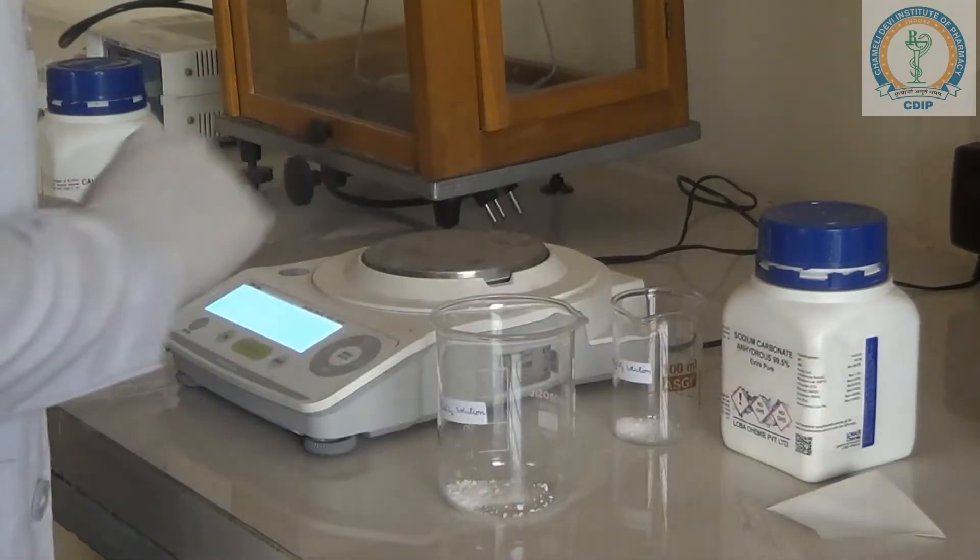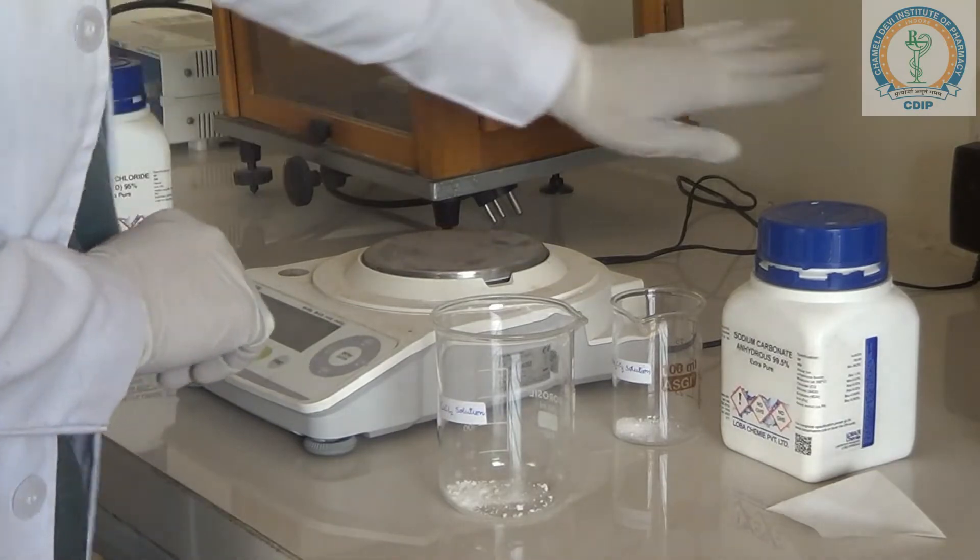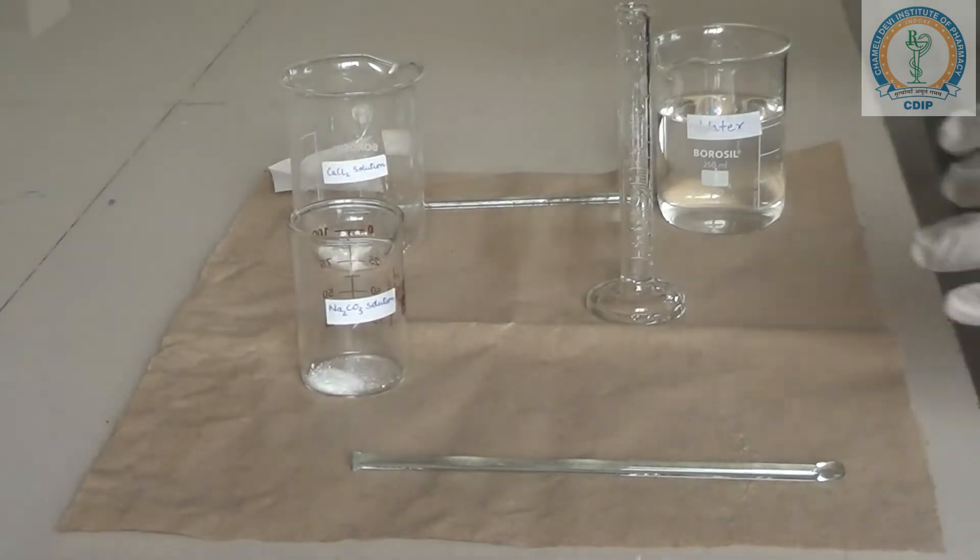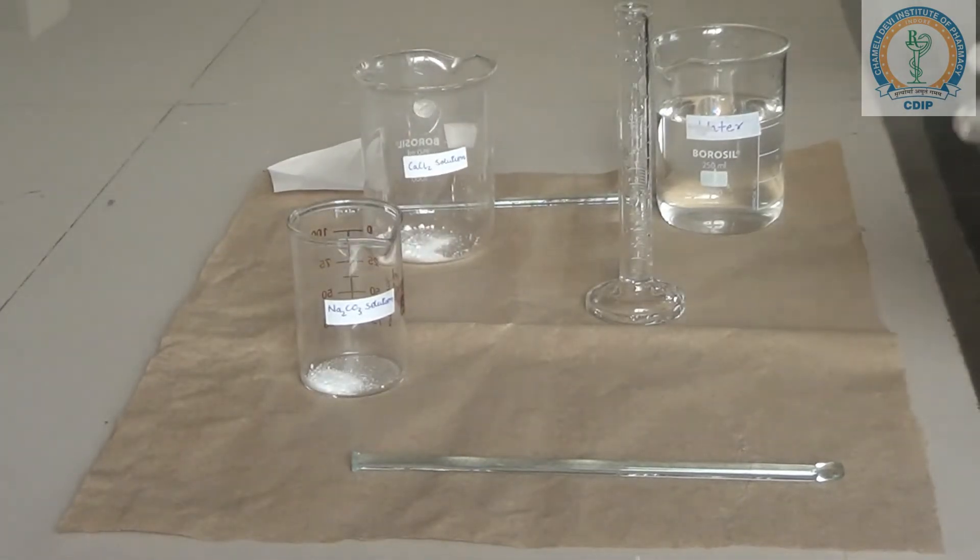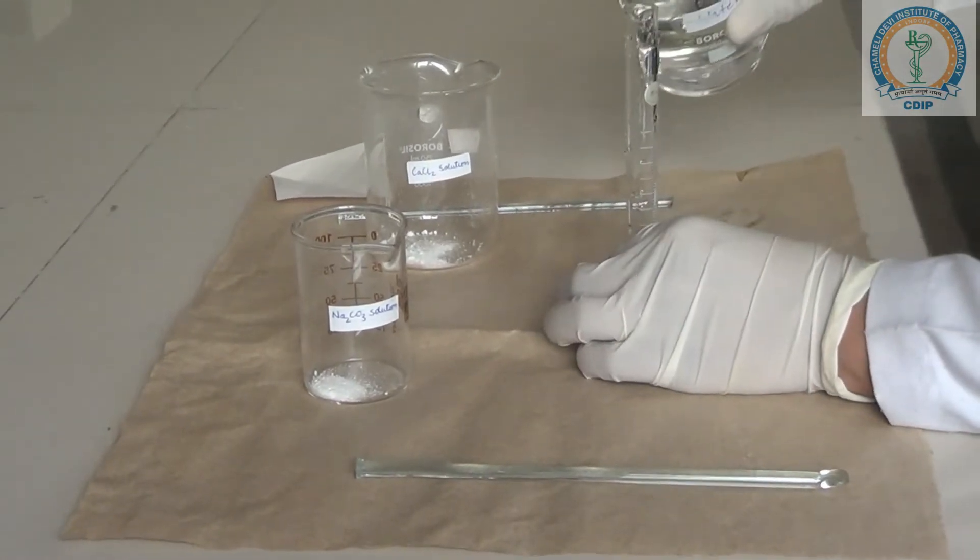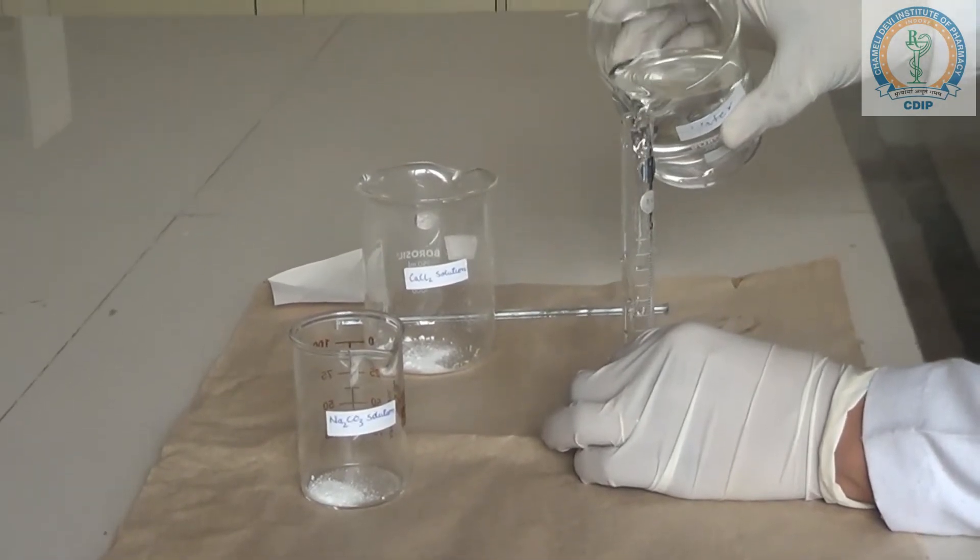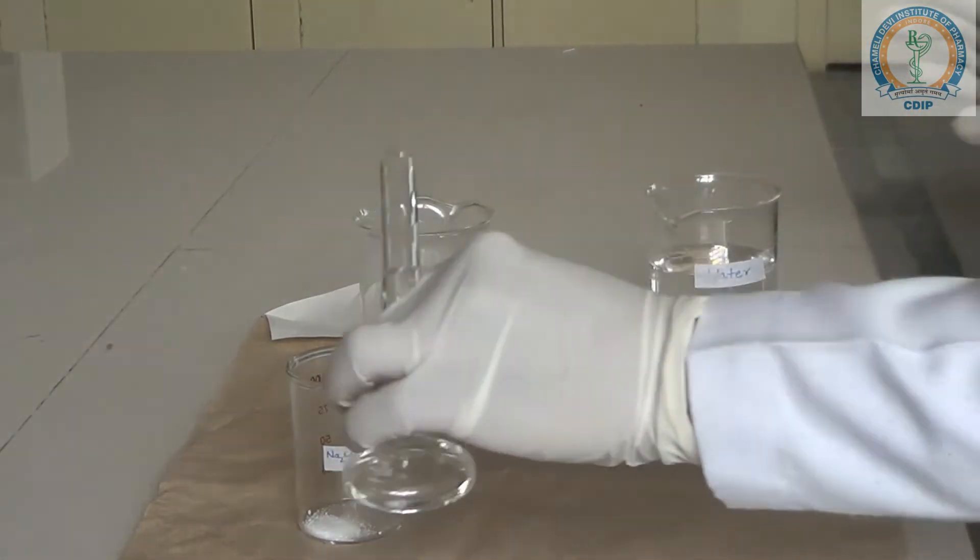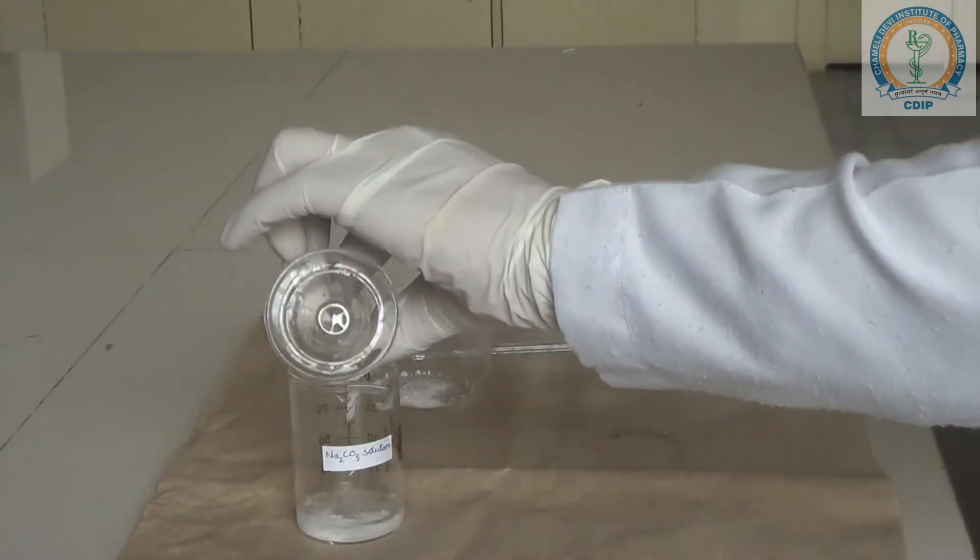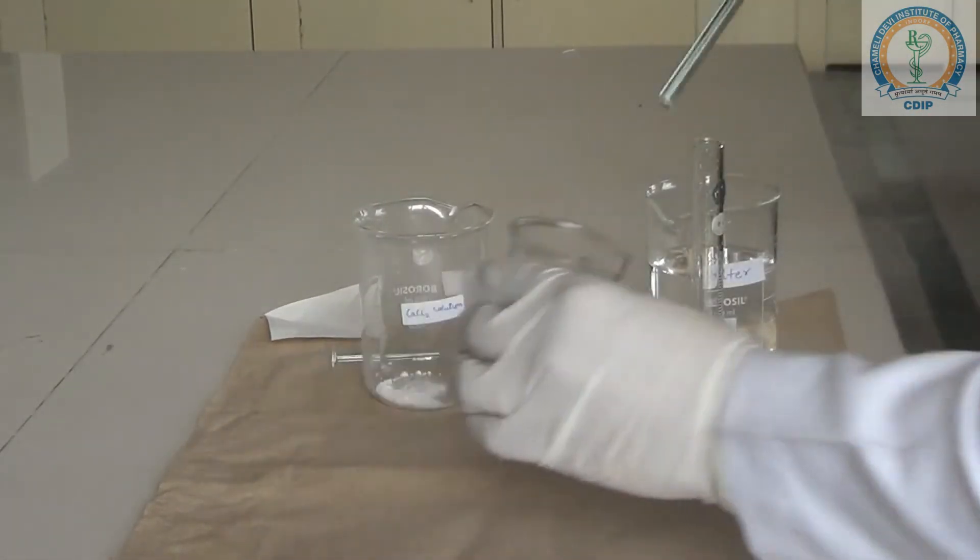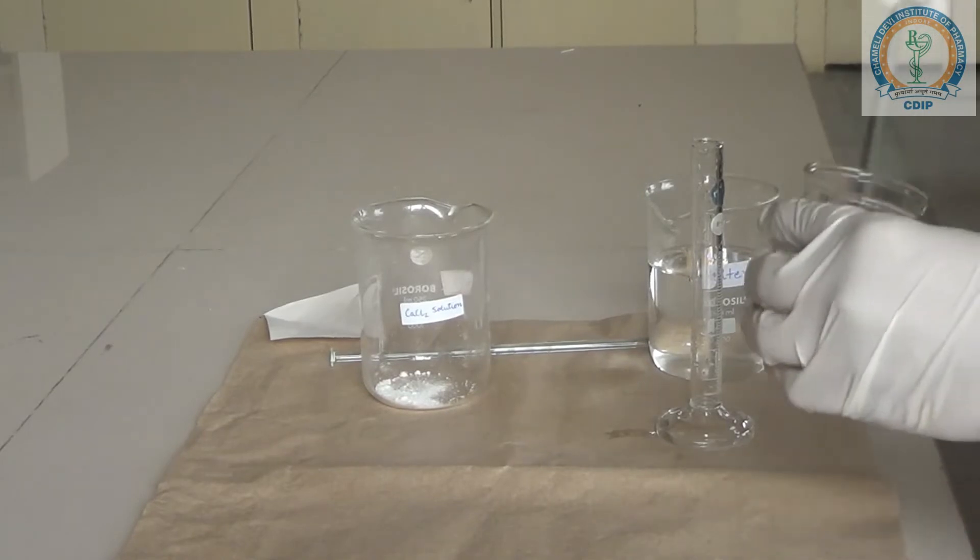We will prepare the solutions separately, both solutions. Now, after weighing this sodium carbonate and calcium chloride, we are going to make the solution of both these substances in water. So we are taking distilled water here, up to 10 ml, and transferring it into sodium carbonate solution and mixing it well, dissolving this inside water.